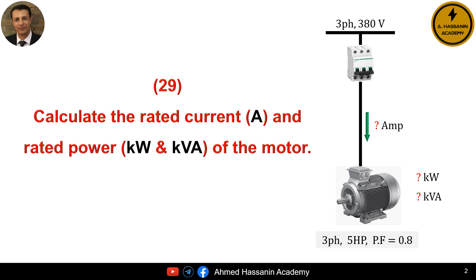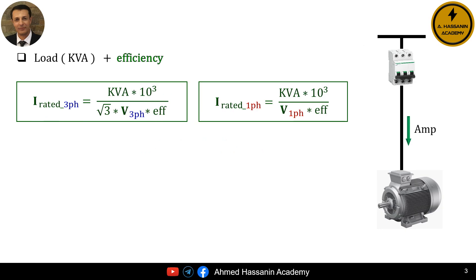Since the motor power is given in horsepower, we must understand an important point. The equations for dynamic loads, such as motors, differ from those for static loads. This means that the equations for dynamic loads include efficiency. Before calculating the rated load current, we first need to know the unit of the load, as there are various units for electrical loads, each requiring a different equation.